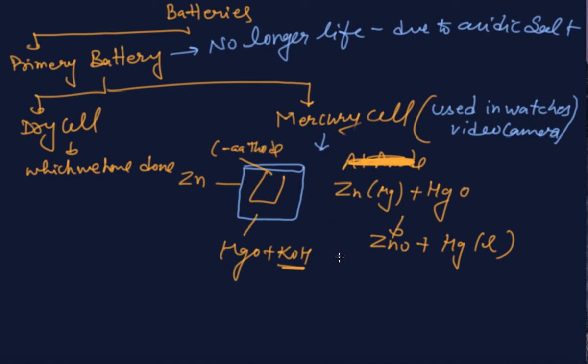Its life is a little bit better than dry cell. Mercury cell's life is better than dry cell because here we are using the electrolyte as a base.